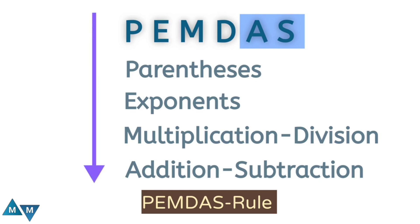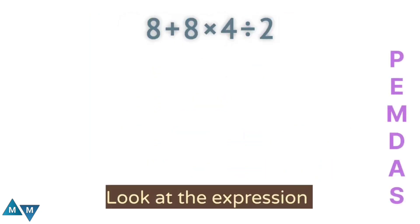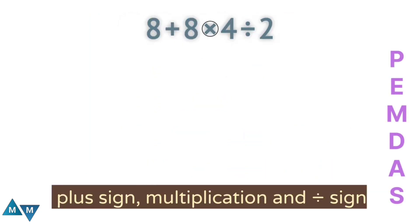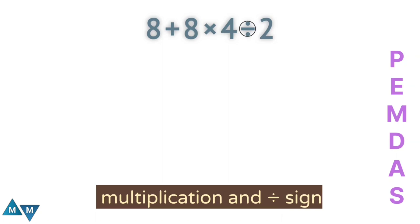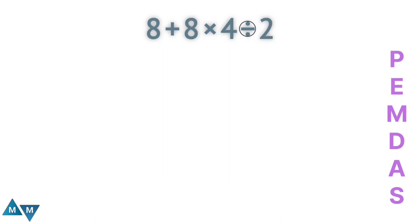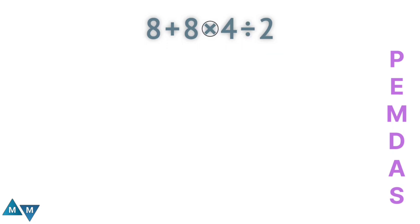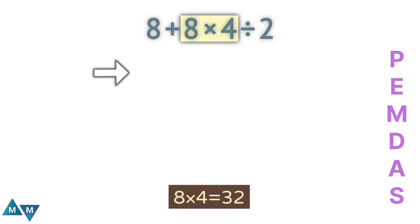The expression contains a plus sign, a multiplication sign, and a division sign. According to PEMDAS rule, multiplication and division have a higher priority than addition. Since multiplication and division have the same priority, we work left to right — and I see multiplication first. So eight times four will be our first move, which equals 32.